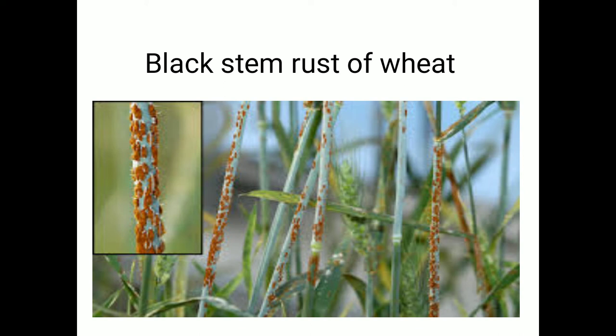The first disease is black stem rust of wheat, caused by the fungus Puccinia graminis tritici. Regarding symptoms, as indicated by the name 'black stem rust,' the stem is mostly infected by the fungus Puccinia, due to which the stalk is severely affected more than the leaf sheath, leaves, and ears.